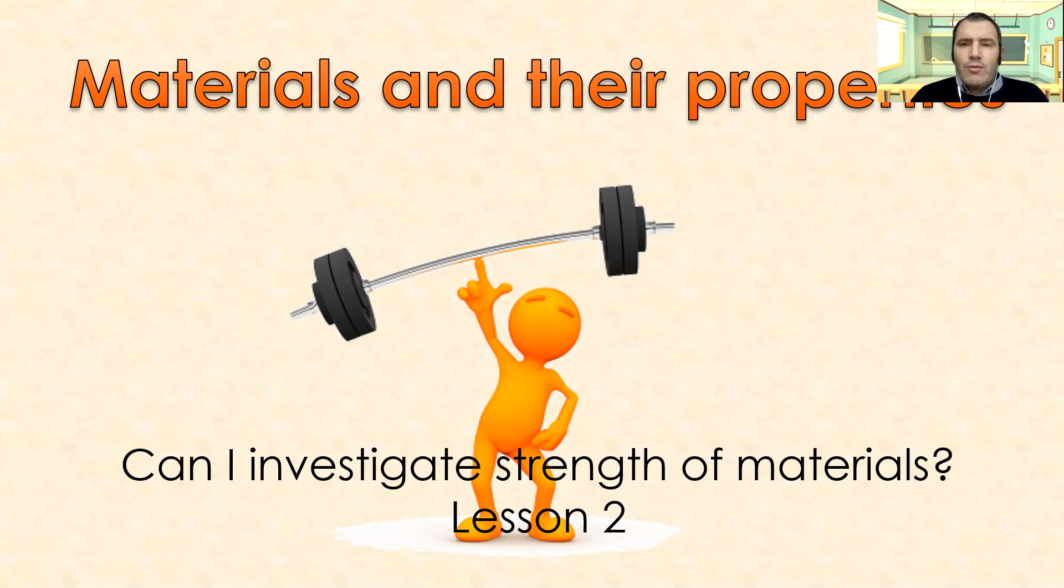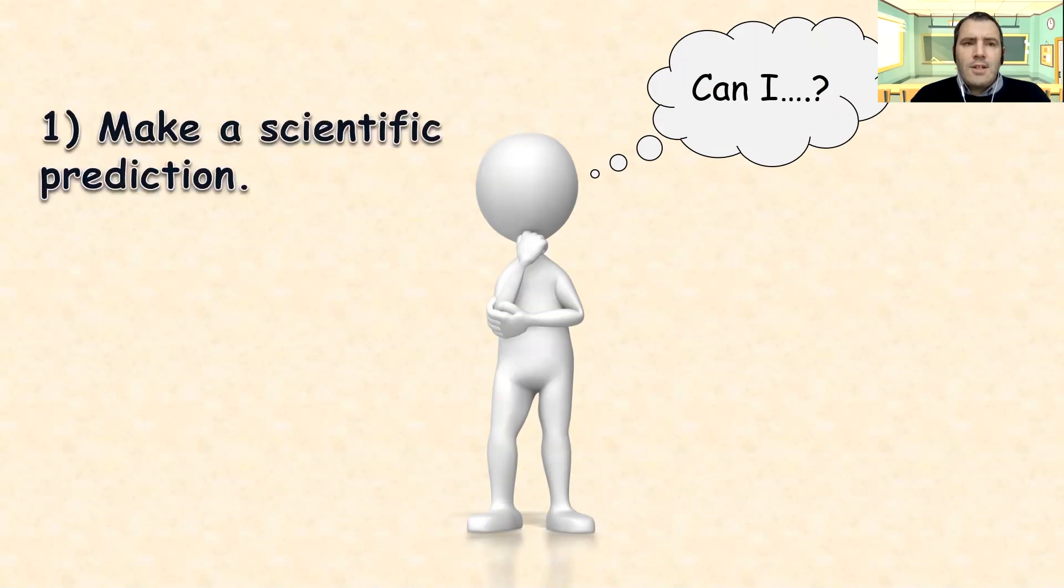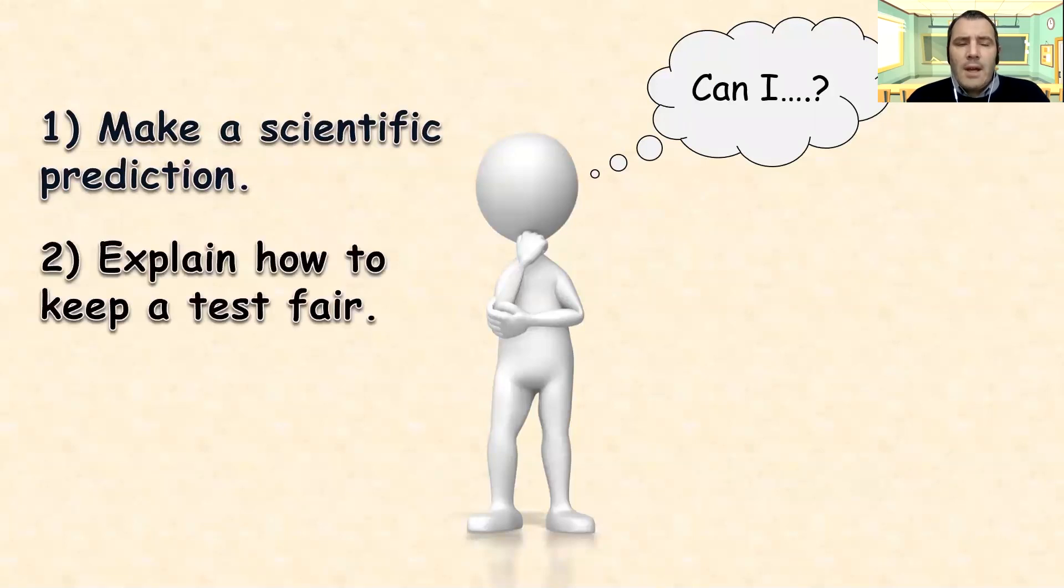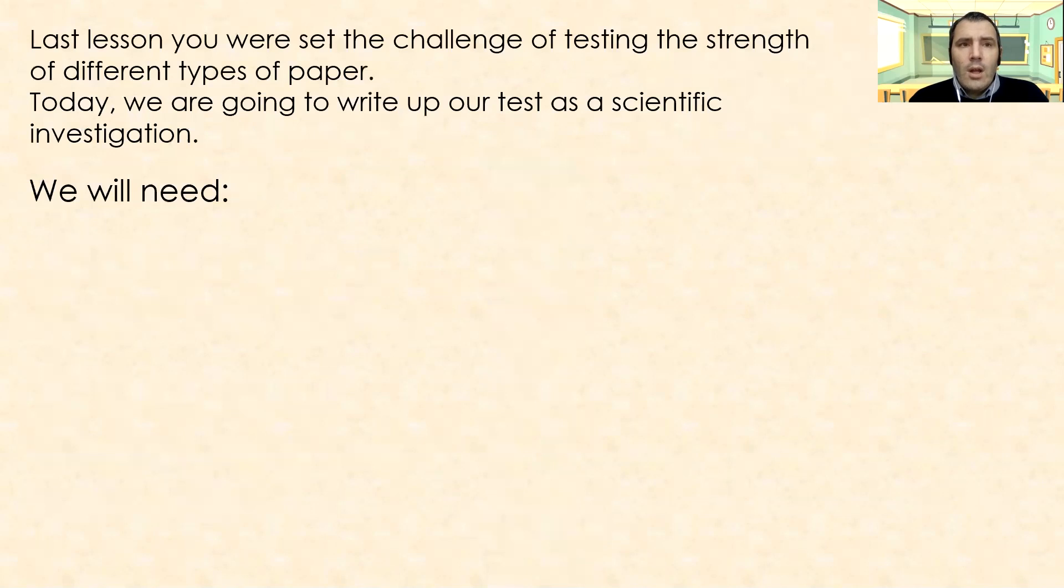What we're going to look at today is writing that up. So a few things we're going to need to think about. Can I make a scientific prediction? You should have done that yesterday, or our previous lesson, made that prediction. Which paper did you think was going to be the strongest? Can you explain how to keep a test fair? Now I know we've done lots of this in class, and we keep going on about it when we design our experiments. I know we certainly did before Christmas. And then record your findings and make a conclusion. So it's about finding an appropriate way to record it, whether it's in a graph, in a table, as a list. We'll cover that as we go through.